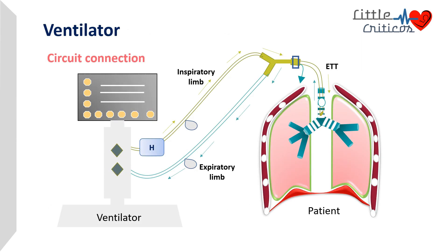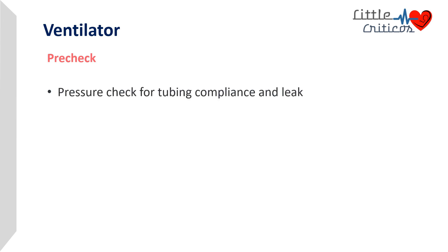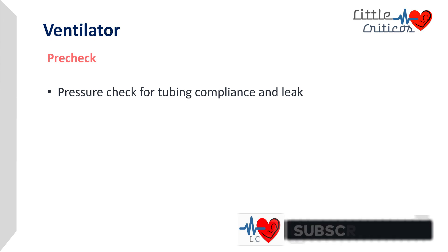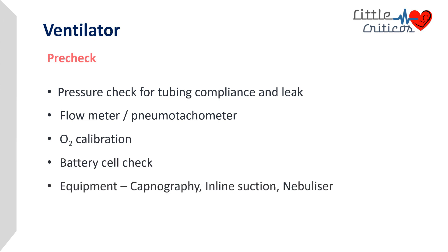In our previous lectures we discussed circuit connections, and it is very important to ensure that all components are properly set. It is important to do a pre-check before connecting the patient to a ventilator. This includes pressure check for tubing compliance and leak, checking the flow meter or pneumotachometer, calibration of the O2 cell, checking the battery source, and checking accessory equipment such as capnography, inline suction, and nebulizer.